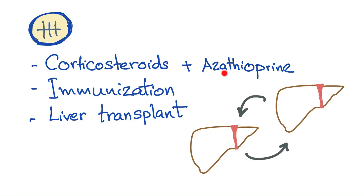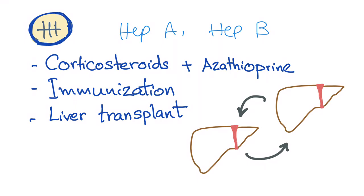Treatment involves corticosteroids; you can add azathioprine, and in severe cases you can use two different steroids plus azathioprine or other immunosuppressive medicines. As a general rule, any patient with any chronic liver condition should be immunized against hepatitis A and hepatitis B — there is currently no vaccine for hepatitis C. Autoimmune hepatitis is no exception to this rule.